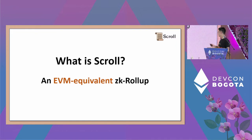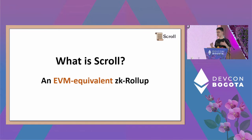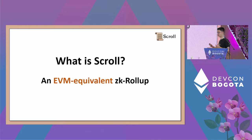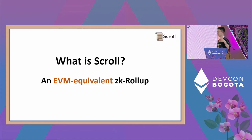We are also EVM equivalent — meaning our ZK rollup is bytecode-level equivalent. Developers can reuse everything they use on EVM layer one, including Hardhat and other development toolings. We achieve native bytecode-level compatibility, which means you can migrate code from layer one to layer two seamlessly.